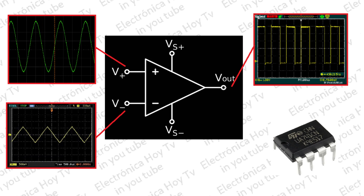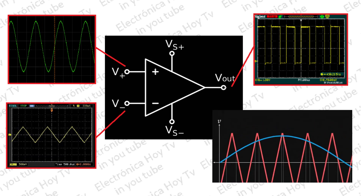Es decir, que si la máxima señal audible es de 20 kHz, la señal de diente de sierra deberá tener como mínimo unos 200 kHz para poder conservar una alta calidad de audio a la salida.